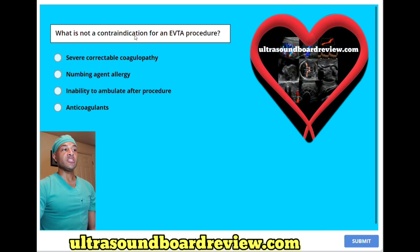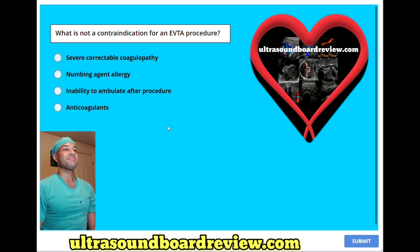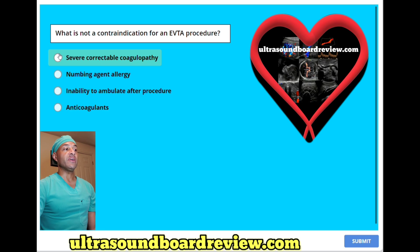Which is NOT a contraindication for an EVTA procedure? A. Severe correctable coagulopathy. B. Numbing agent allergy. C. Inability to ambulate after procedure. Or D. Anticoagulants. The answer is A. Severe correctable coagulopathy. If this said incorrectable coagulopathy, then that would be a contraindication.